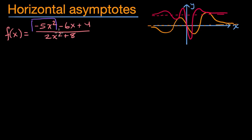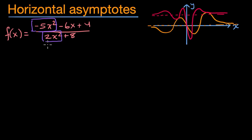This is a rational function — expressed as a ratio, a fraction. You have a polynomial on top and a polynomial on the bottom. If you look at the highest-degree terms: when x becomes very, very large, the negative five x squared in magnitude becomes so much larger than the negative six x or even the four. Similarly in the denominator, as x gets larger in the positive or negative direction, the two x squared is going to matter a lot more than that eight.